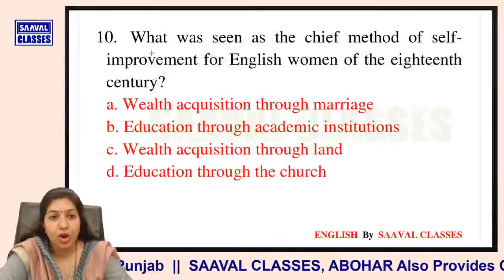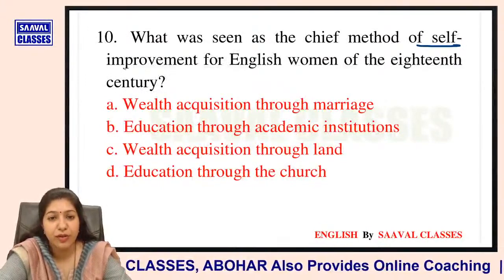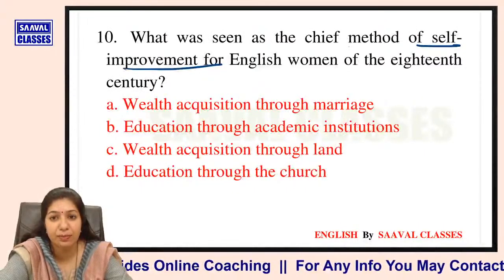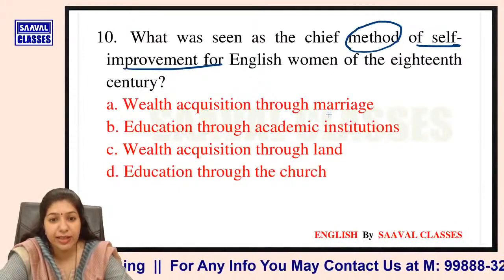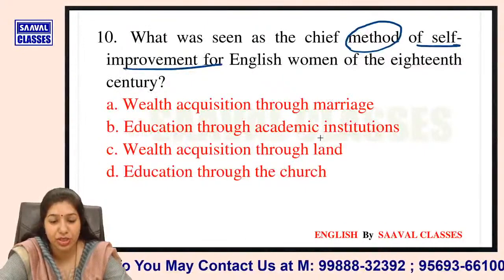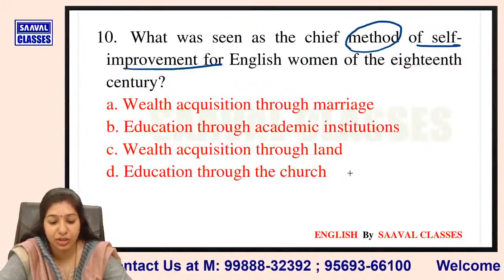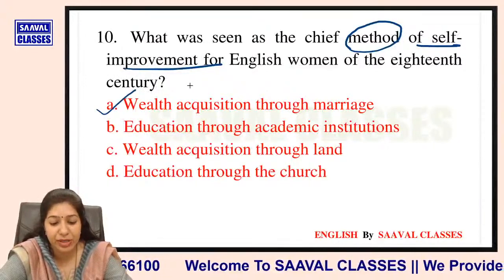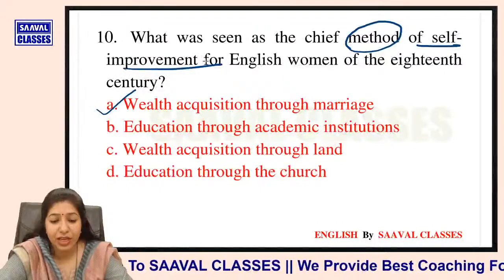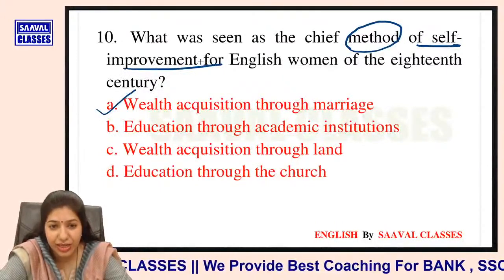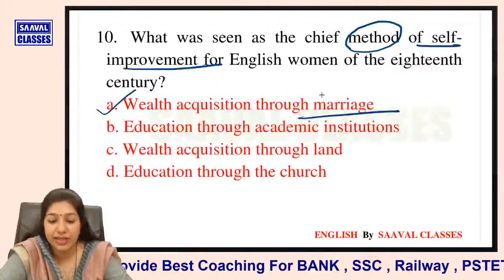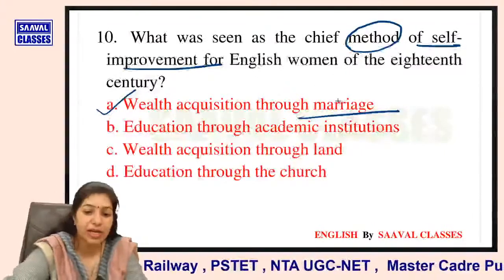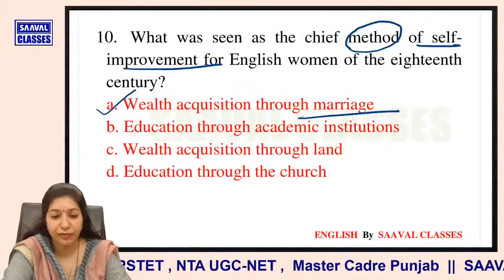Question number 10: What was seen as the chief method of self-improvement for English women of the 18th century? Options are wealth acquisition through marriage, education through academic institutions, wealth acquisition through land, ya education through church? Obviously, jaise Pride and Prejudice ki first line mein hai — women are in the search of fortune. Marriage ke zariye future secure hota tha, chahe Bennett sisters ke character mein ho ya Charlotte ke character mein.